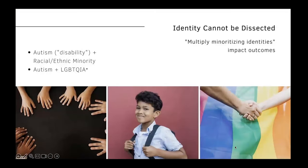For a variety of reasons, we've begun to think within the context of autism about what it means for autistic people to occupy multiple minoritizing identities — how it affects their access to services, their life experiences, the actual outcomes they're able to achieve, the outcomes others envision for them, or they are able to envision for themselves. I'm going to talk about two studies: one around autism and racial ethnic identity, and one around autism and being part of the LGBTQIA spectrum.